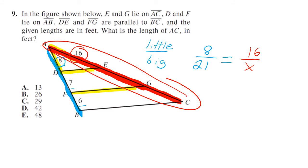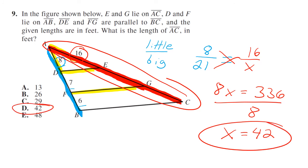We have 8X equals 21 times 16. Just do that on your calculator, 336. Divide both sides by 8, and you get X equals 42. So your answer is 42.